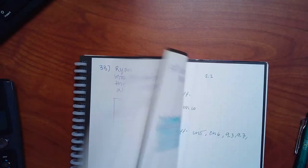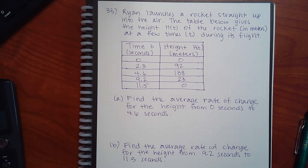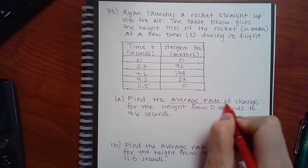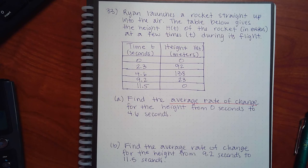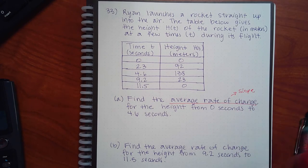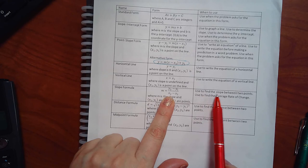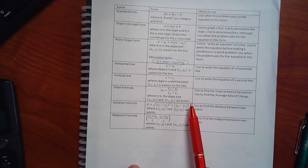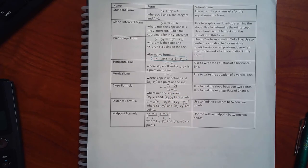There's one more thing: the phrase 'average rate of change.' That is the word-problem version of the word slope. On your paper, the slope formula says 'use to find the slope between two points' — it also says 'use to find the average rate of change,' because that's what slope is: the change in one quantity per the change in another.